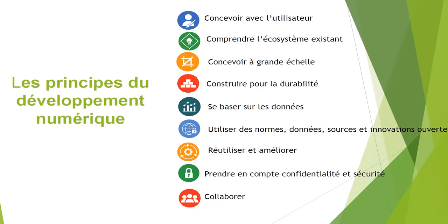Le principe numéro 7 est de réutiliser et d'améliorer tout ce qu'on peut, ne pas recréer la roue. Dans l'analyse de l'infrastructure et de l'écosystème, si des utilisateurs utilisaient une solution qui donne des résultats, mieux vaut la réutiliser en l'améliorant aussi pour couvrir les résultats qui ne sont pas encore pris en charge par cette solution. Il faut aussi prendre en compte la confidentialité et la sécurité autour des données, le respect de la vie privée, et favoriser la collaboration entre les participants.